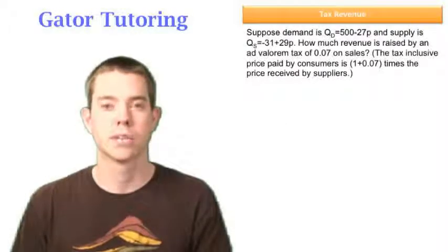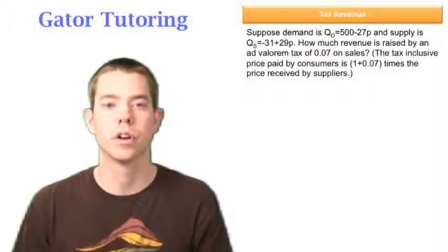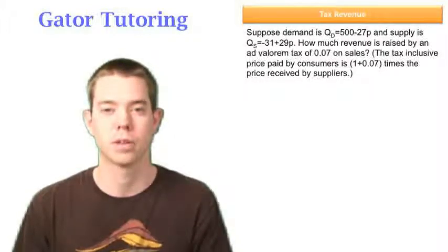It gives us demand and it gives us supply. It says, how much revenue is raised by an ad valorem tax of 0.07 on sales. And then it clarifies and says, the tax-inclusive price paid by consumers is 1 plus 0.07 times the price received by suppliers.